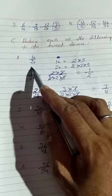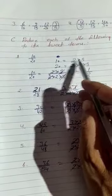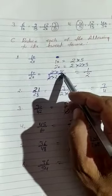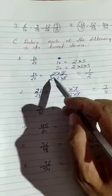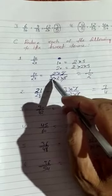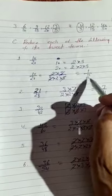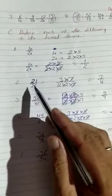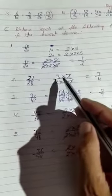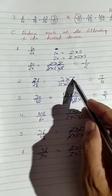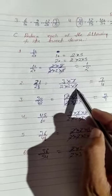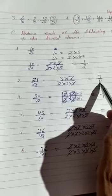First fraction is 10 upon 20. Using prime factorization for 21 upon 28: 3 times 7 is 21, and 2 times 2 times 7 is 28. 7 cancels. We have 3 and 2 times 2 is 4, giving 3 upon 4 in lowest term.